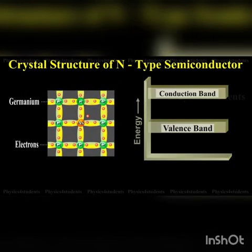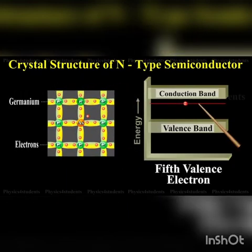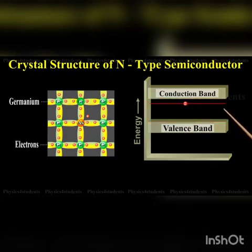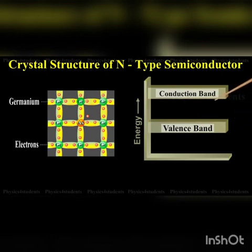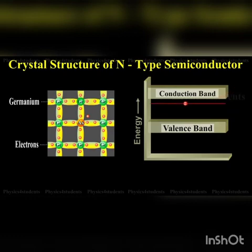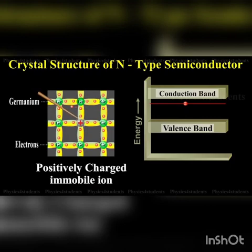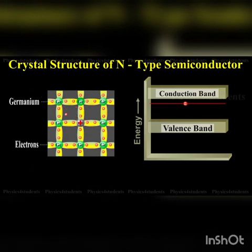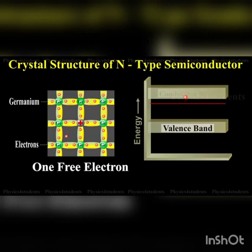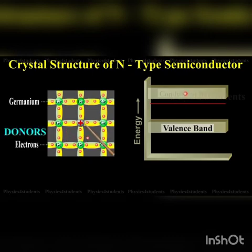In the energy band picture, the energy state corresponding to the fifth valence electron is in the forbidden gap and lies slightly below the conduction band. This level is known as the donor level. When the fifth valence electron is transferred to the conduction band, the arsenic atom becomes a positively charged immobile ion. Each impurity atom donates one free electron to the semiconductor, so these impurity atoms are called donors.